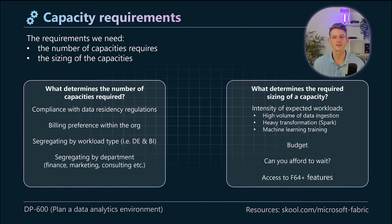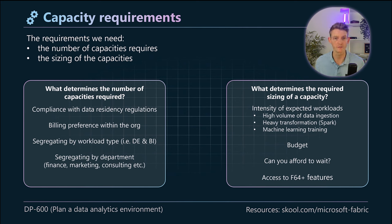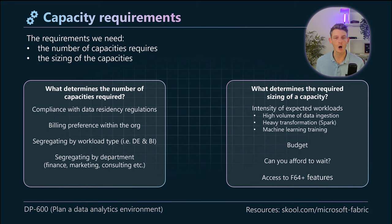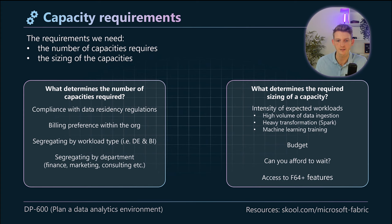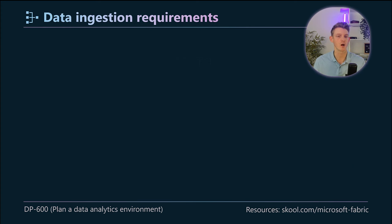Another thing that can determine sizing is whether the client wants access to F64 features. There are quite a lot of features that open up at F64, with Copilot being a good example. These features, listed on screen, are only available if you choose F64 capacity or above. So if you want to use any of these features, you need an F64 or higher.